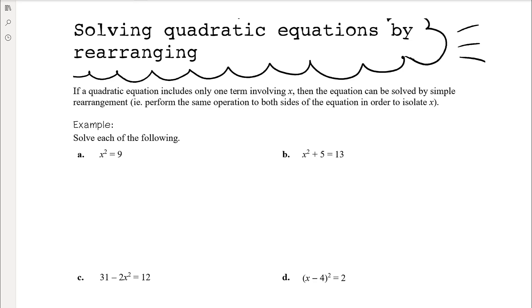In this first question, part A, we have a quadratic equation — an equation where the highest power of x is 2 — but we don't need any complicated methods because we can simply isolate x by doing the same thing to both sides. We have x squared equals 9, so we take the square root of both sides. When we take the square root, there are two possible answers: x could be the positive square root of 9, or the negative square root of 9, so x equals positive or negative 3.